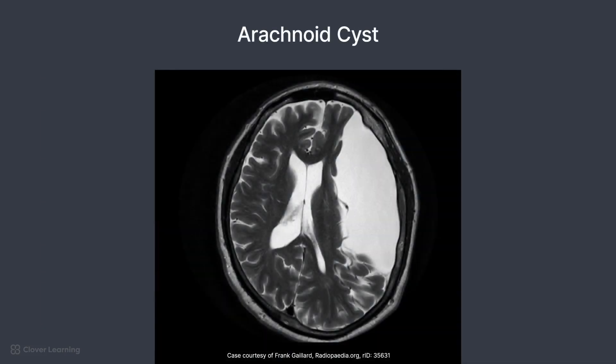An arachnoid cyst is the most common brain cyst that may be imaged with MRI. These occur in the arachnoid layer of the meninges and appear on T2-weighted images as a sphere-like shape filled with cerebrospinal fluid. These are usually non-cancerous, therefore would not need gadolinium contrast.